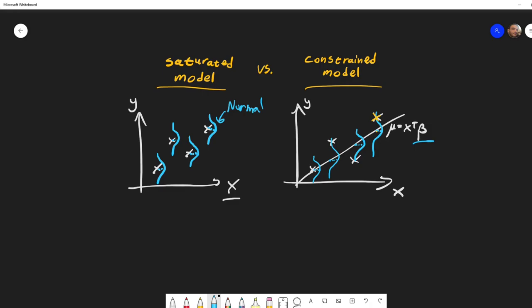You are not constraining yourself to some line that has to pass, or some other structure, you're just putting the probability on the points.